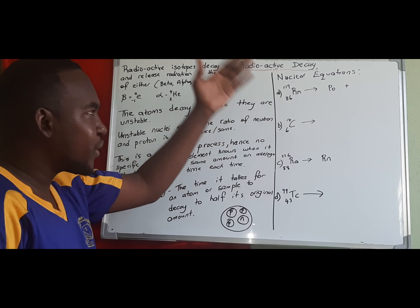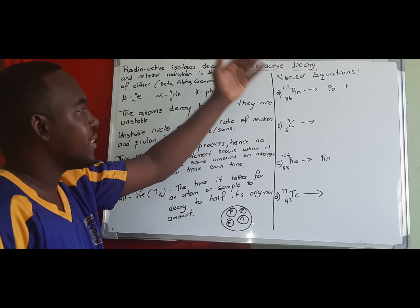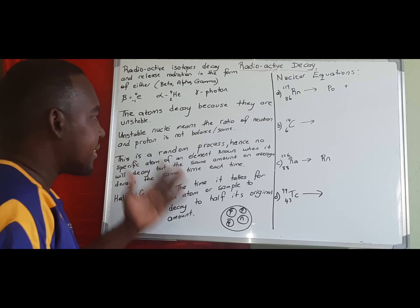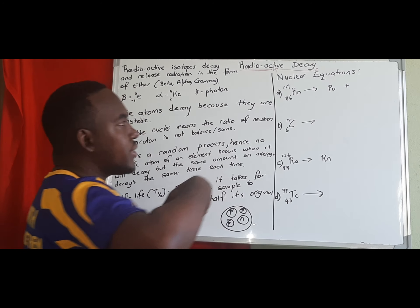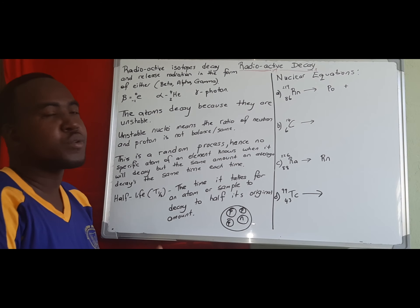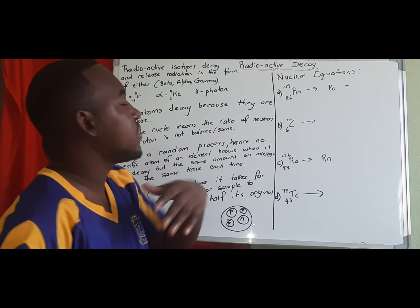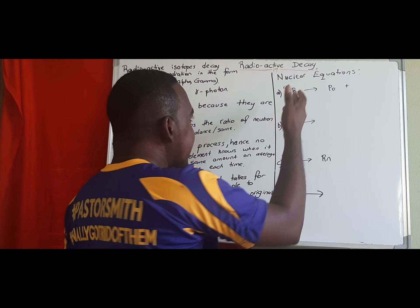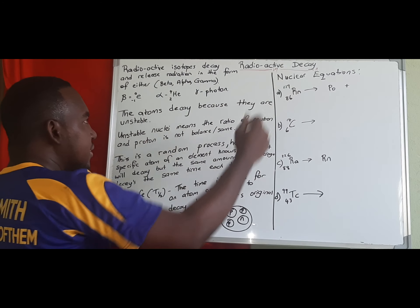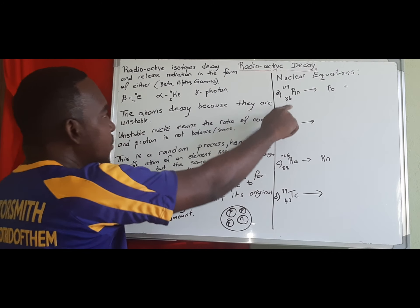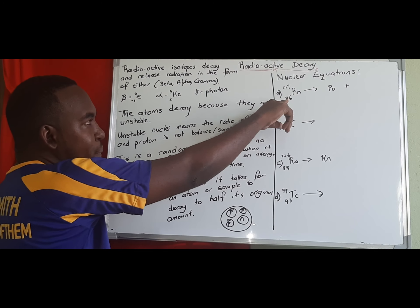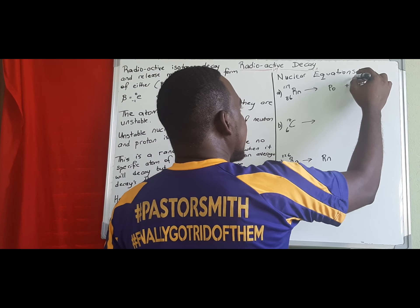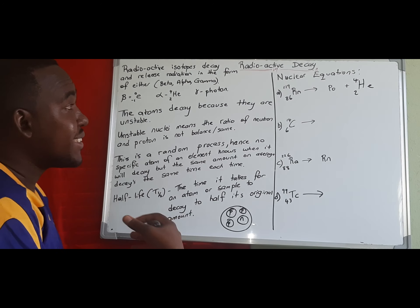In physics, you're not required to know the names or correct symbols of all elements — an exam may give you random symbols. The important part is what happens to the atomic number and the mass number. In our first example, we have radon with atomic number 86 and mass number 219. Since it's above 30 and above 83, it will emit alpha radiation, which is helium-4 with atomic number 2.